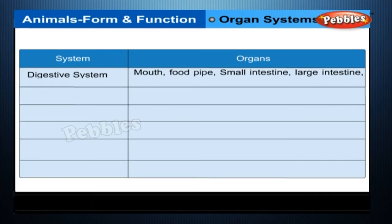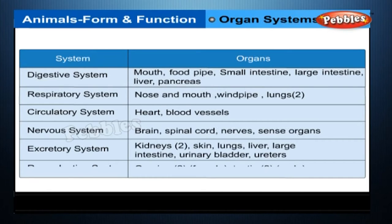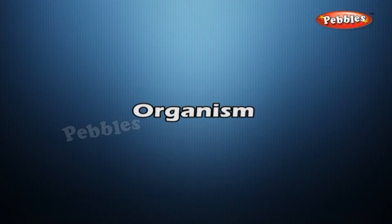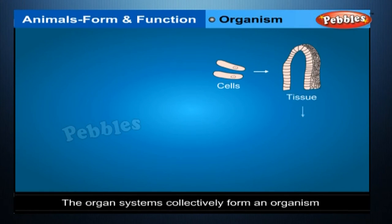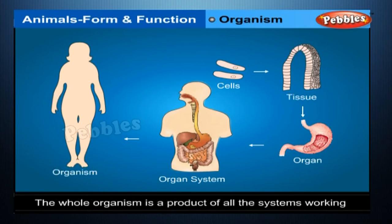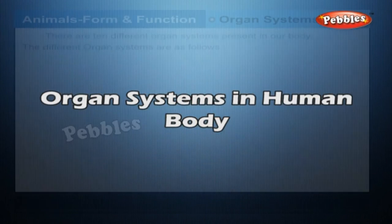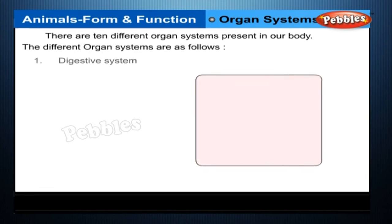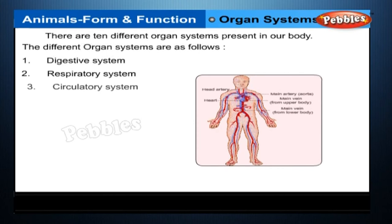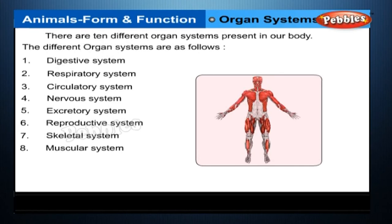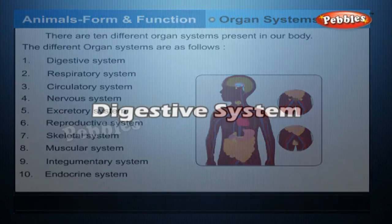Organ systems and their organs. There are ten different organ systems present in our body: the digestive system, respiratory system, circulatory system, nervous system, excretory system, reproductive system, skeletal system, muscular system, integumentary system, and endocrine system.